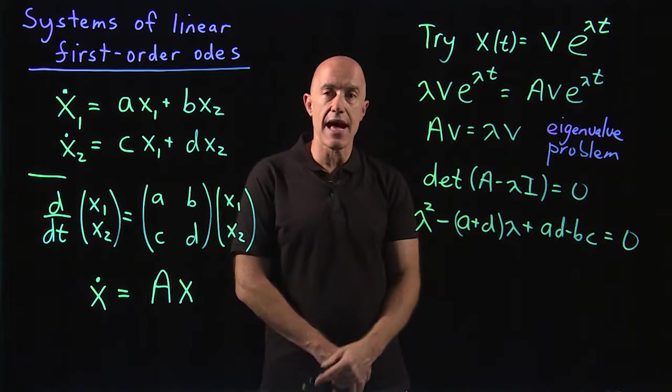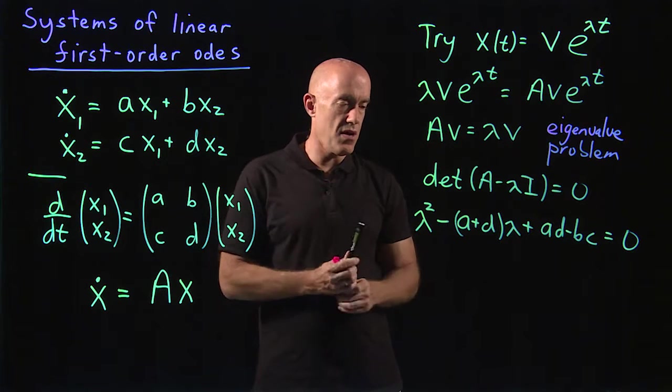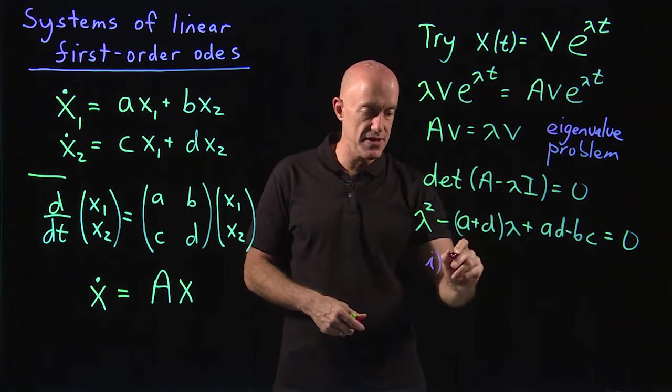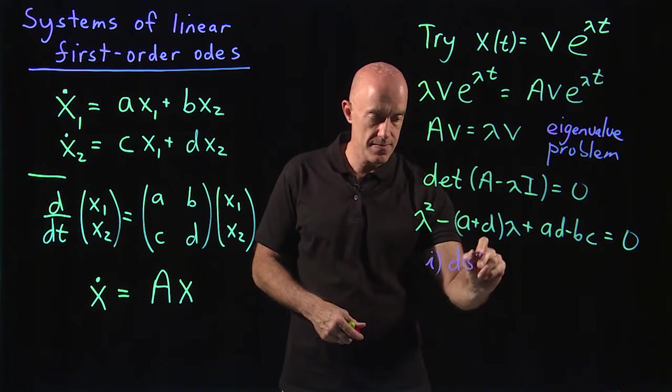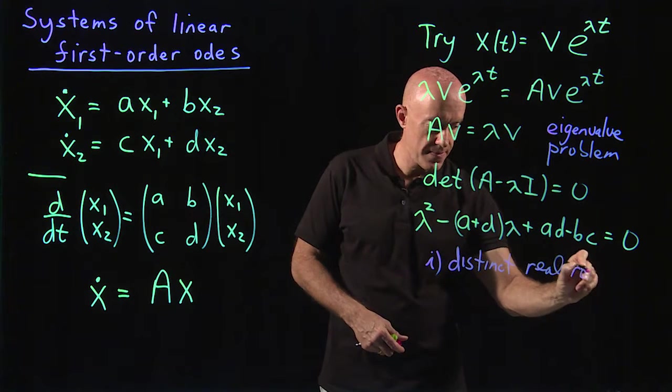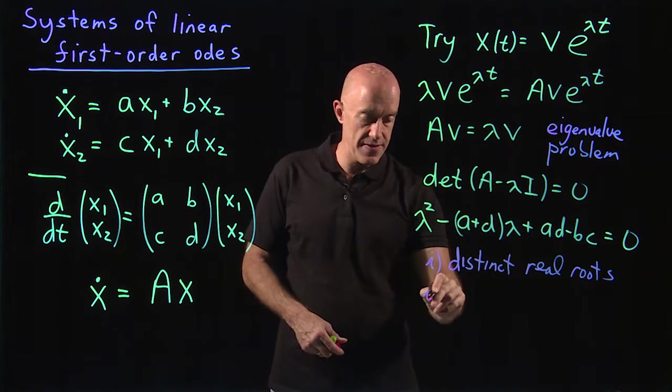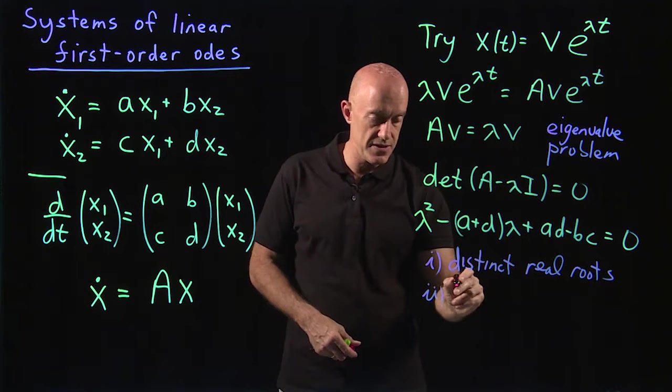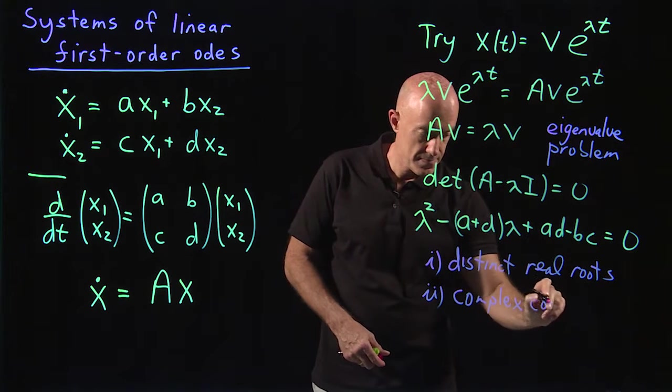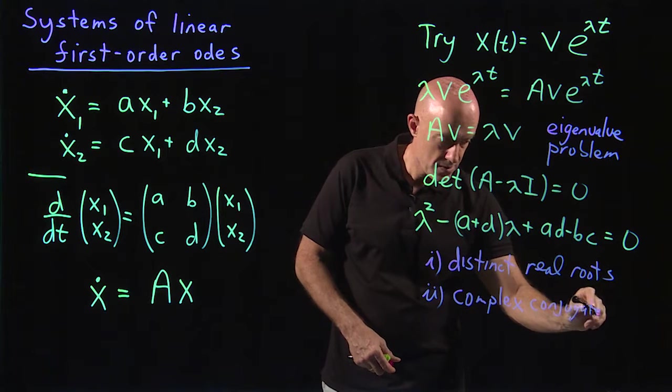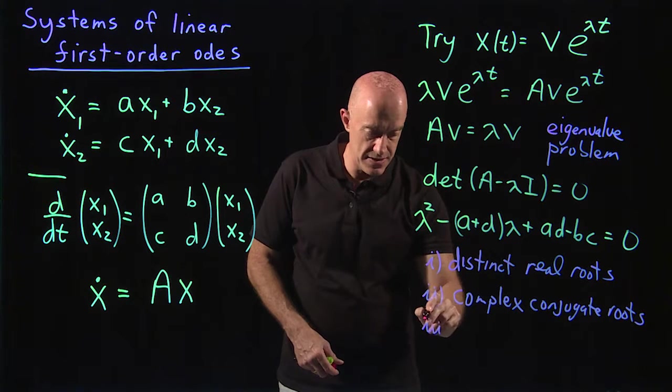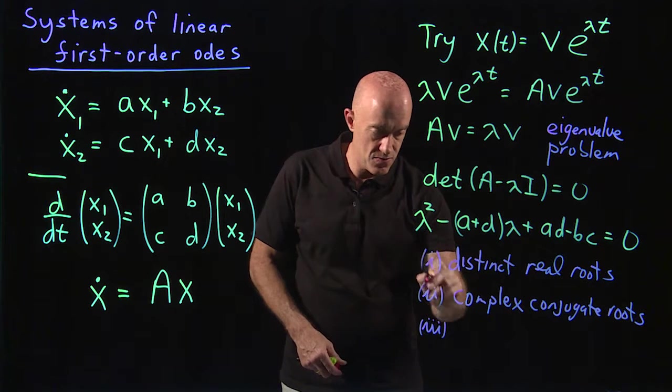Okay. Three things can happen in a quadratic equation. What are they? The first one is that you can have distinct real roots for the eigenvalue lambda. The second thing that can happen is you can have complex conjugate roots. And the last thing that can happen is you can have repeated roots.